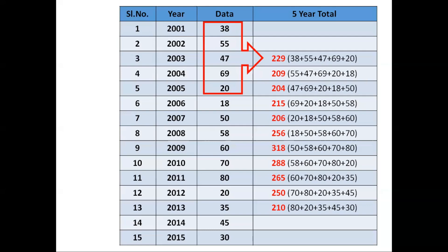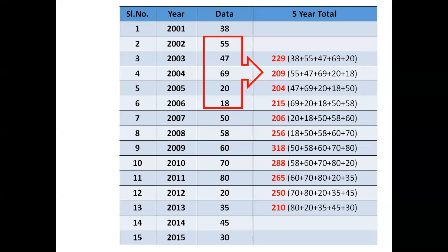For the second step, you drop the first entry and start counting from the second one, adding the next five entries. That means starting from 2002 and adding through 2006: 55 + 47 + 69 + 20 + 18, giving a total of 209. This value is written in the corresponding middle position in the five-year total column.